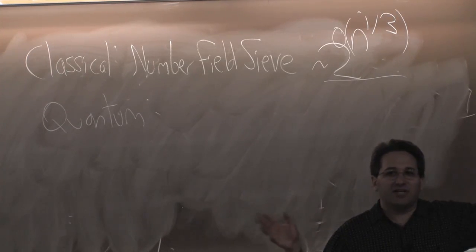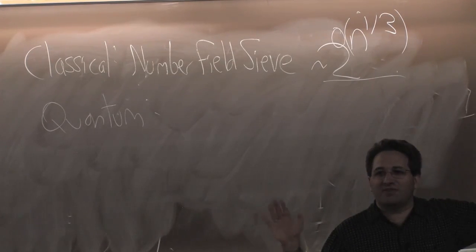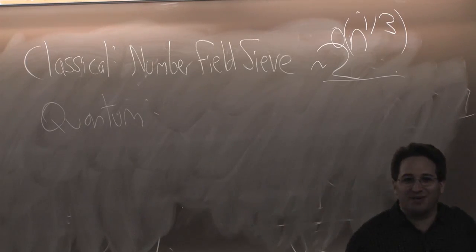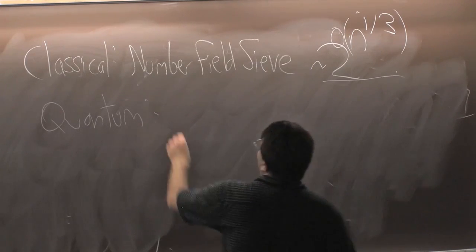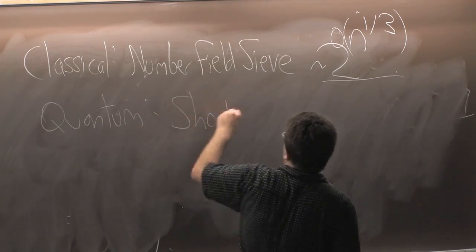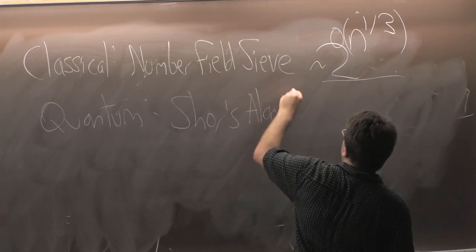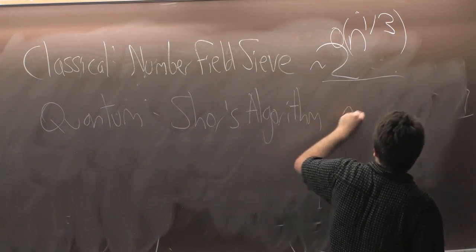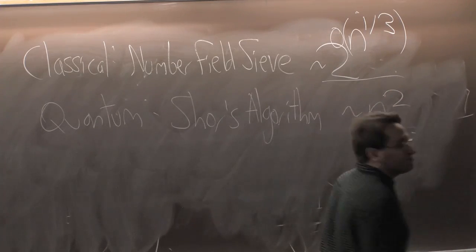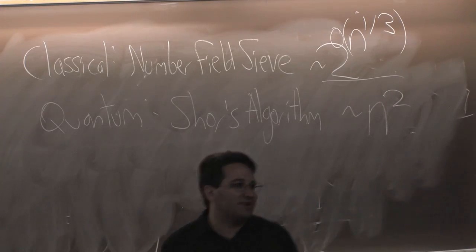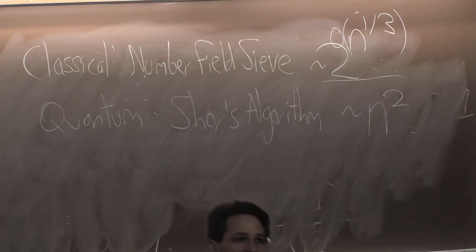like I think even 128 decimal digit numbers. Quantumly, we have Shor's algorithm, and Shor's algorithm actually needs only about n-squared steps. Maybe n-squared log n or something.